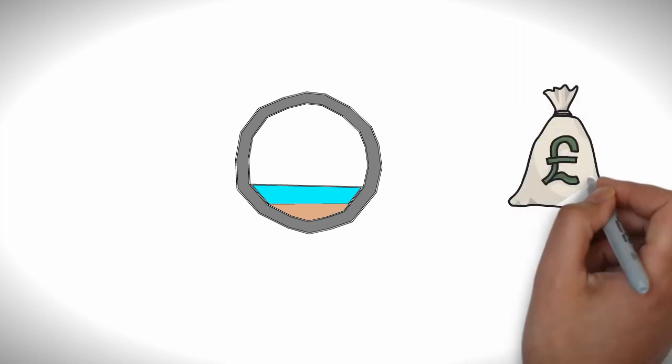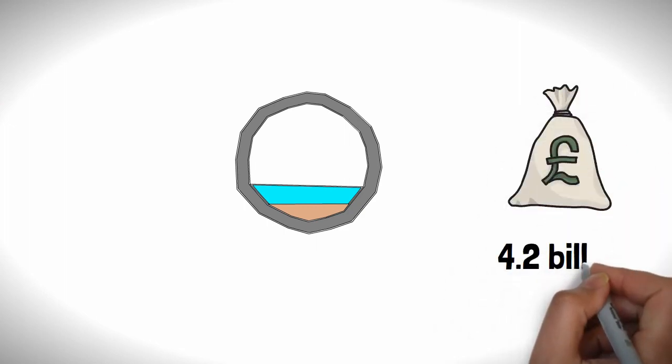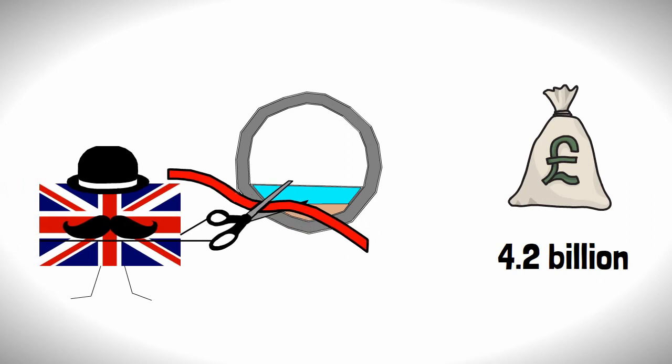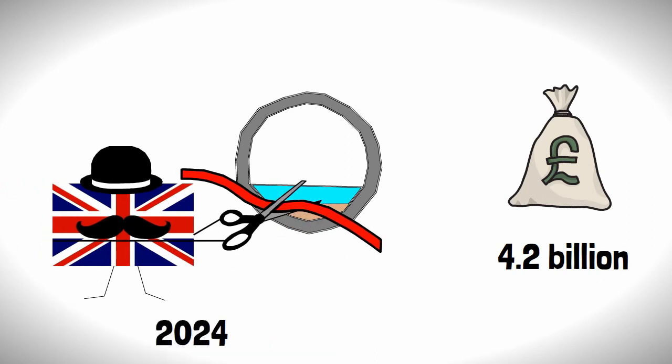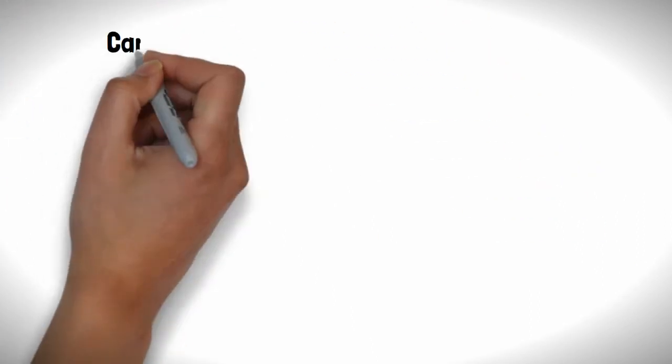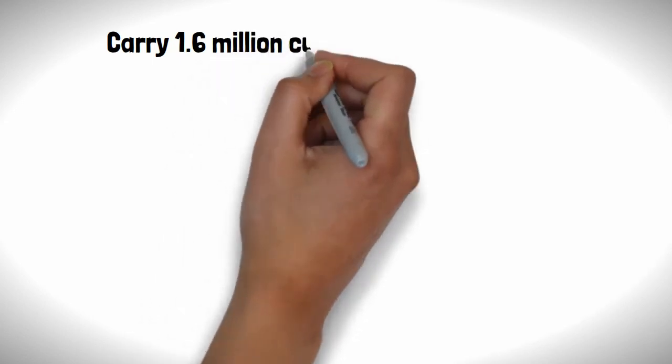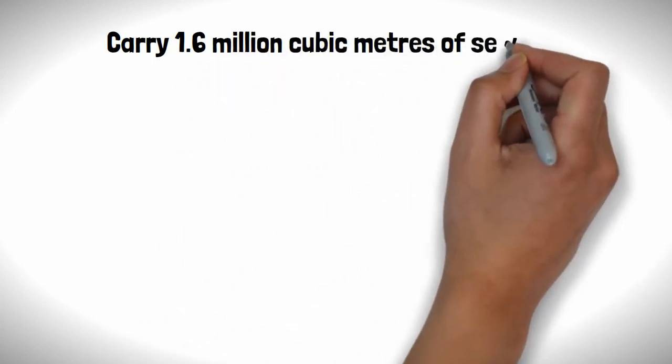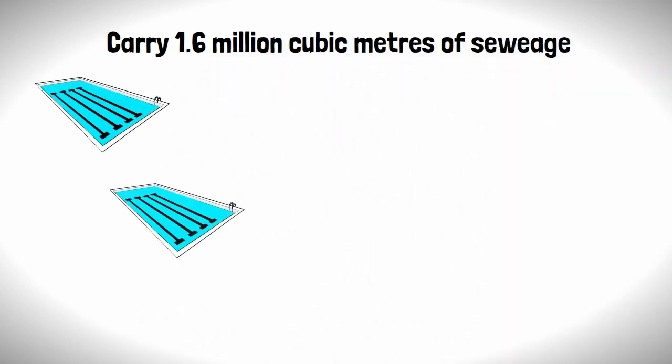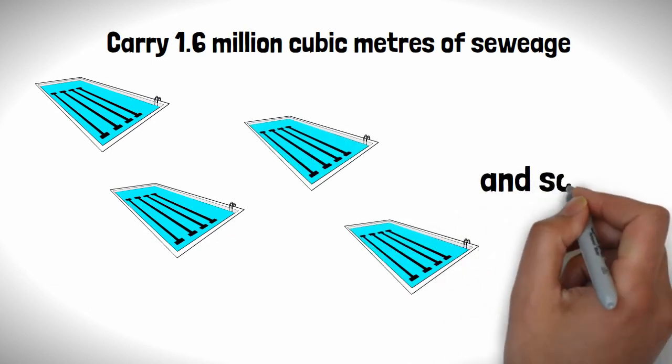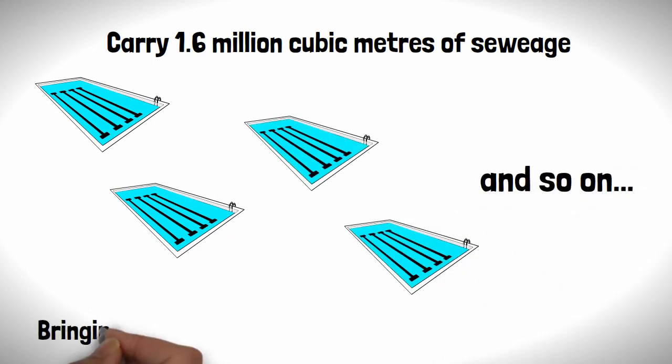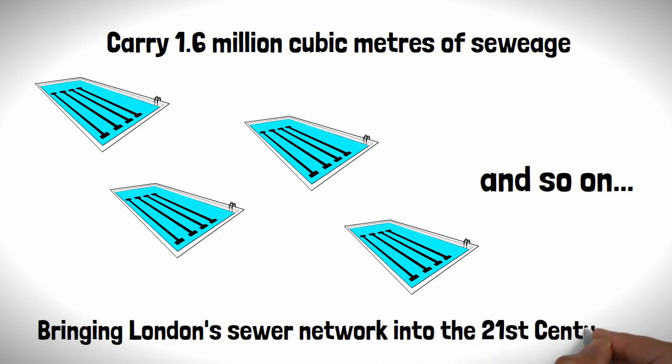The tunnels are expected to cost a cool £4.2 billion and should be completed by 2024. When finished, the tunnels should be able to carry 1.6 million cubic metres of sewage, which is the same as nearly 700 Olympic-sized swimming pools, bringing London's sewer network into the 21st century.